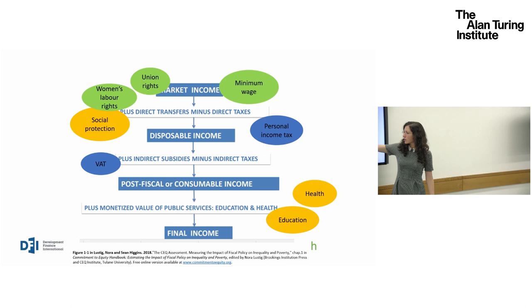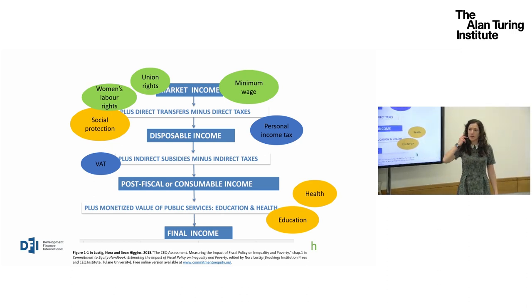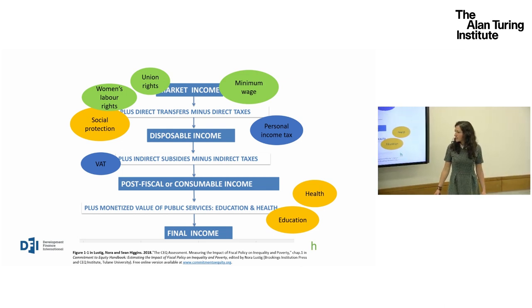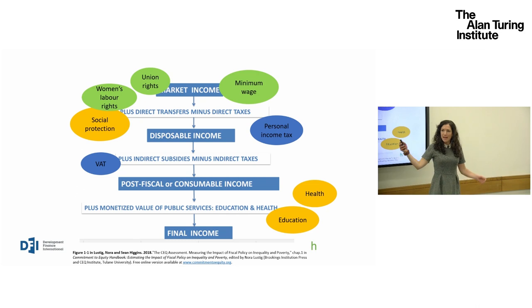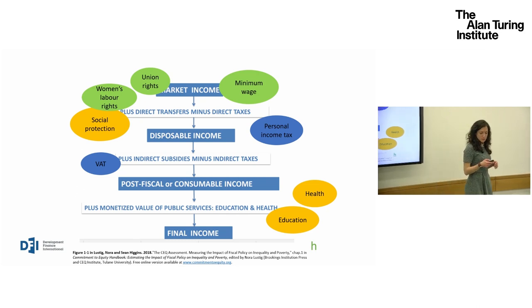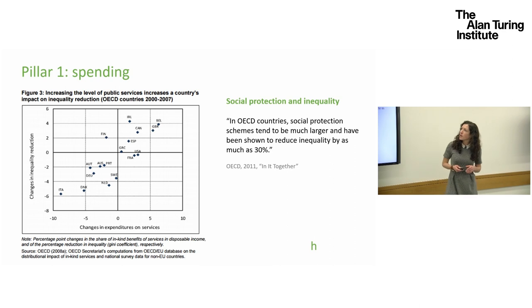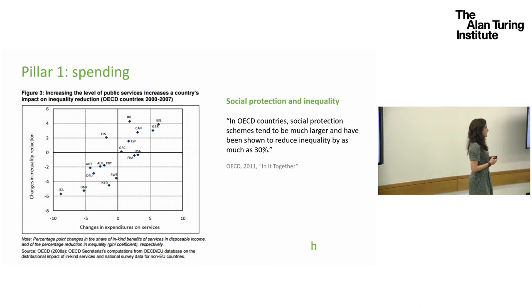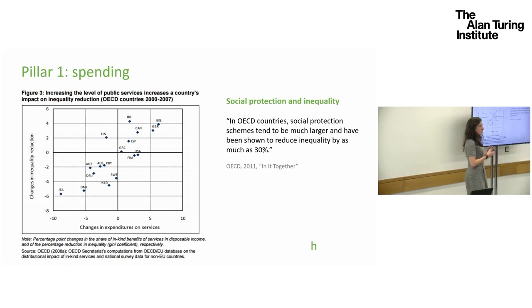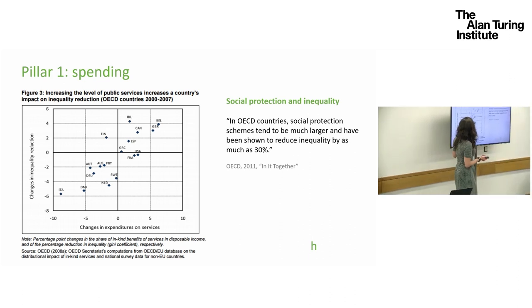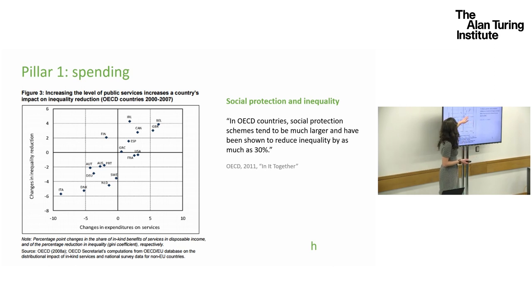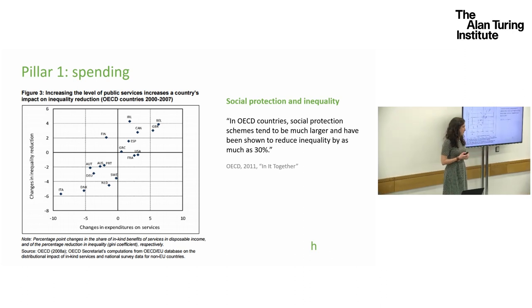This diagram comes from Nora Lustig's work at the Commitment to Equity project, which is looking specifically at the incidence of different policies and how they can be effective at reducing inequality. On that first pillar — spending — research finds that as a general rule of thumb, the more you spend on public services, on health and education, the more you will reduce inequality. Spending on social protection can also directly reduce the gap between the rich and the poor. The first indicator we look at is purely the volume of spending as a share of total spending that goes to health, education and social protection.